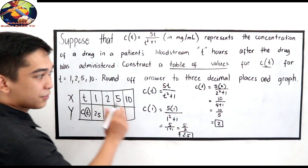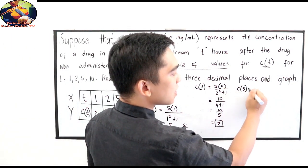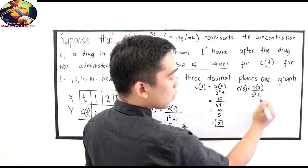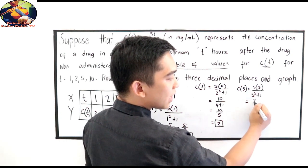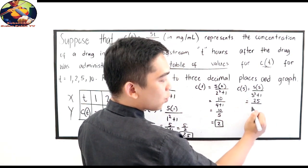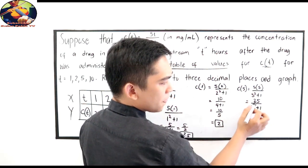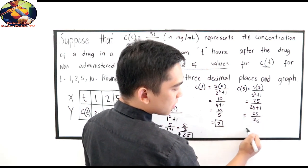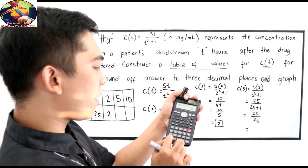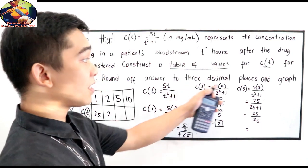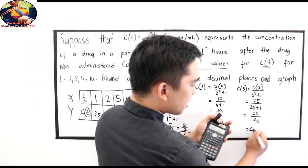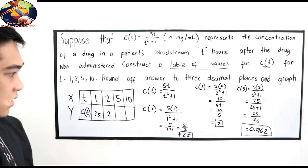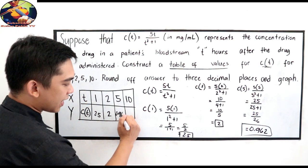Next, 5. So, C of 5 is equal to 5 times 5 all over 5 squared plus 1. 5 times 5, that is 25 all over 5 squared, 25 plus 1. 25 all over 25 plus 1, 26. Let's divide now. 25 divided by 26, 3 decimal places. So, this is 0.962. That's our value. So, let's put 0.962.